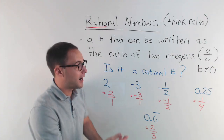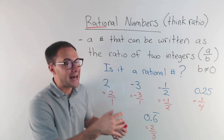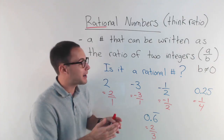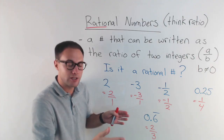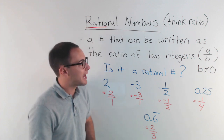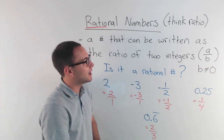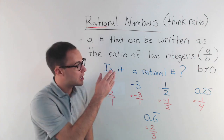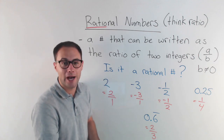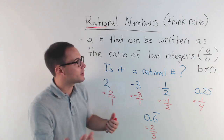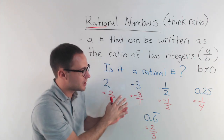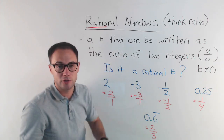An obvious example of a number that's not rational would be pi. Pi continues forever and never repeats, so you cannot write it as a ratio of two integers like a over b. So pi is not rational — that's irrational. And that's how you check.